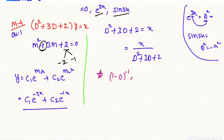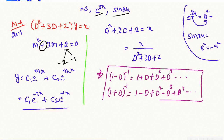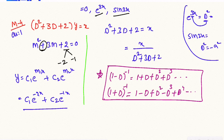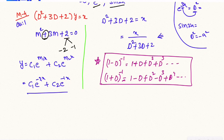The formula is: 1/(1 - D)^(-1) gives 1 + D + D² + D³ + ... And 1/(1 + D)^(-1) gives 1 - D + D² - D³ + D⁴ + ... We use these inverse operator expansions to solve the particular integral.